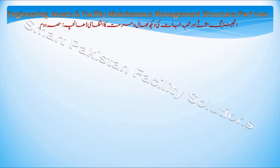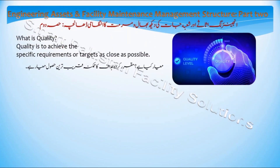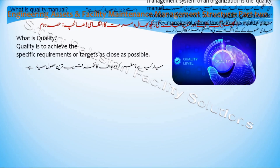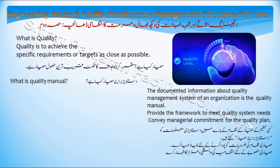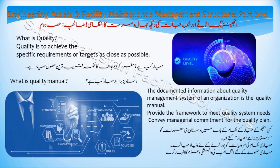What is quality? Quality is to achieve the specific requirements or to meet targets as close as possible. What is a quality manual? The documented information about the quality management system of an organization is the quality manual. It provides the framework to meet quality system needs and conveys managerial commitment for the quality plan.